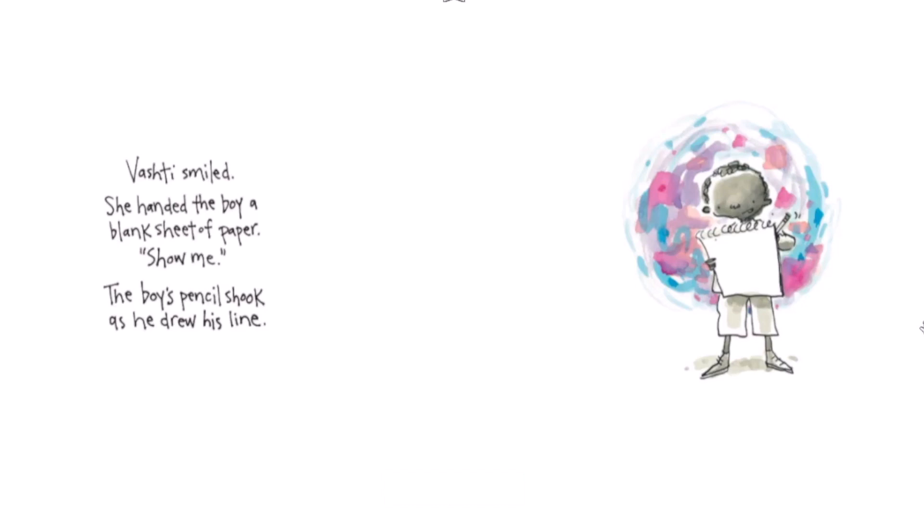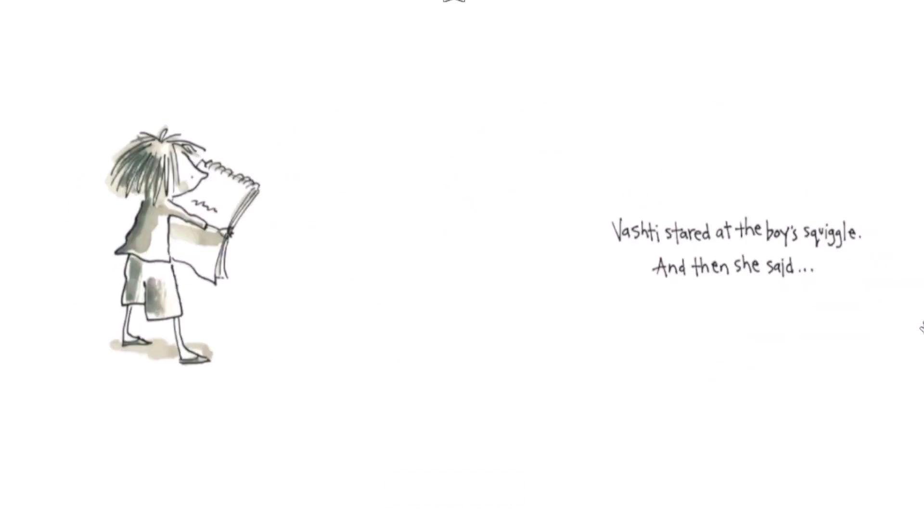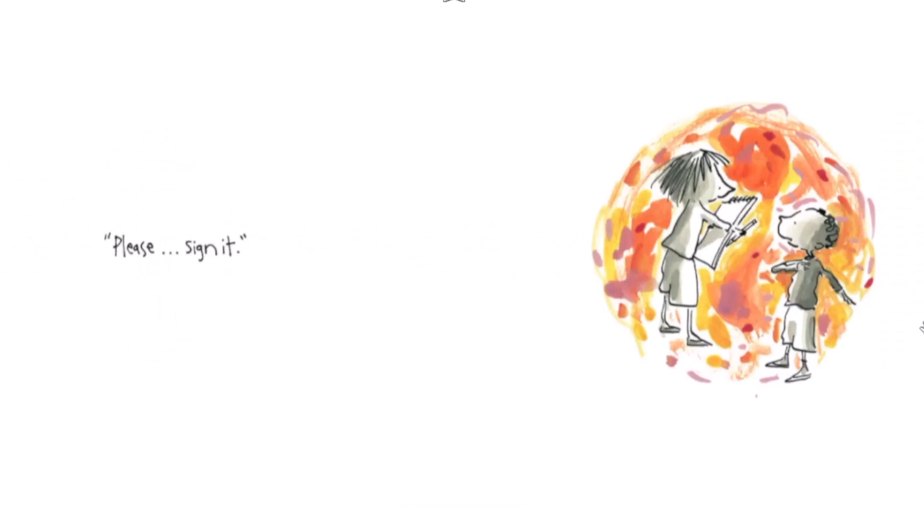The boy's pencil shook as he drew his line. Vashti stared at the boy's squiggle. And then she said, 'Please, sign it.'